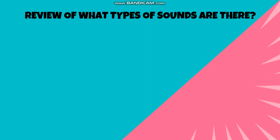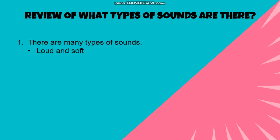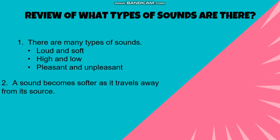This is the review of what types of sounds there are. There are many types of sounds. The first one is loud and soft sound. The second is high and low sound — high sound has a high note and low sound has a low note. Next, we have pleasant and unpleasant sounds.